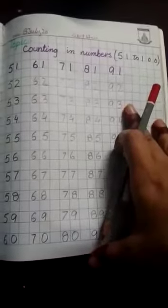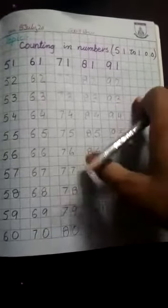The next subject is math on copy work. First of all we will revise the previous lesson, then we will start today's lesson. Okay, first of all we will revise the previous lesson, counting in numbers 51 to 100.